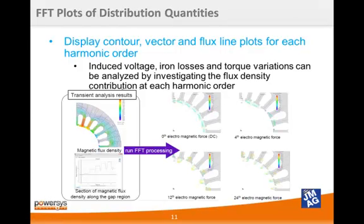When you generate harmonic currents, it is sometimes useful to separate results by harmonic frequency. In JMeg version 12, you can now take distribution quantities such as contour, vector, and flux line plots and display their values as a function of harmonic order. In this example, we plot the magnetic flux density and then run the tool to generate flux density vector plots at various harmonic orders. This allows us to see how each harmonic frequency affects the results.